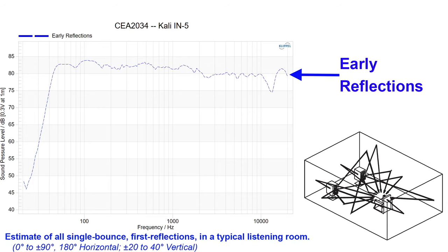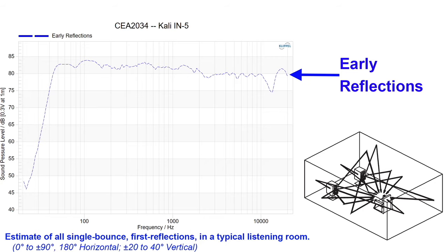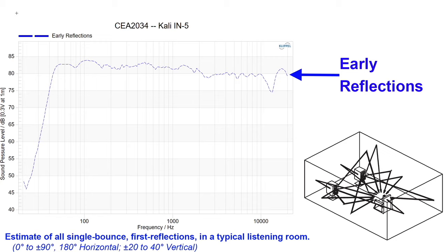The next line in the CEA 2034 SpinOrama data is the early reflections line. This graphic from Dr. Toole's book illustrates it: you're getting the frontal hemisphere of the speaker — everything firing in the front half toward you — along with the rear wall reflections, which hit the wall directly behind the speaker and bounce back to the listener. The definition is: an estimate of all single-bounce first reflections in a typical listening room, from zero to plus-or-minus 90 degrees horizontally and then 180 degrees horizontal, as well as plus-or-minus 20 to plus-or-minus 40 degrees in the vertical plane.